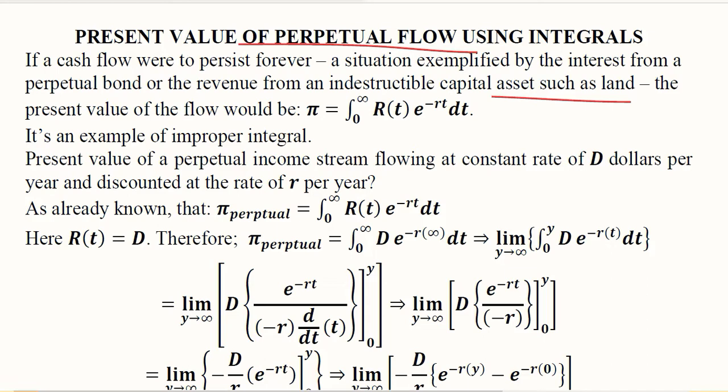Let us see how we can do this. In addition to land, it is also exemplified by interest from perpetual bonds. In such situations the formula will change slightly as we already had the hint of it.